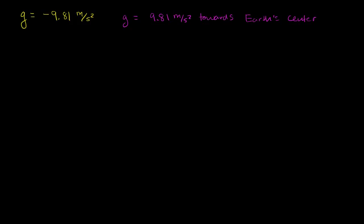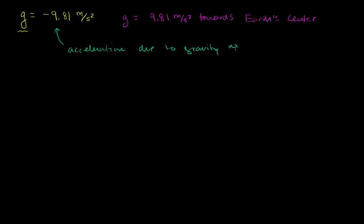What I want to do in this video is think about the two different ways of interpreting lowercase g, which many textbooks will give you as either 9.81 meters per second squared downward or towards the Earth's center, or sometimes given as negative 9.81 meters per second squared. The most typical way to interpret this value is as the acceleration due to gravity near Earth's surface for an object in free fall.